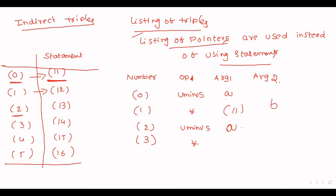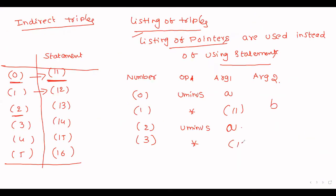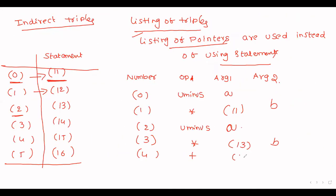Next step: statement 3 is multiplication. Instead of writing statement number 2, we write pointer 13. Then addition between statements 1 and 3 — instead of writing 1 and 3, we write pointers 12 and 14. Finally, the last step assigns x the value from statement 4 — in the indirect triple, statement 4 is referred to as pointer 15. This is the indirect triple representation. These are the different implementations of three address code. Thank you.